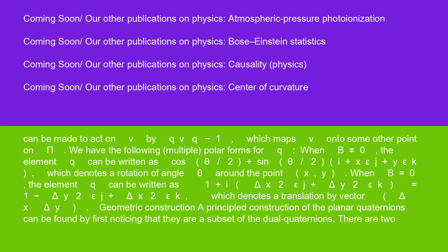We have the following multiple polar forms for Q. When B is not equal to 0, the element Q can be written as cos(theta/2) plus sin(theta/2) times (i plus X epsilon J plus Y epsilon K), which denotes a rotation of angle theta around the point (X, Y).